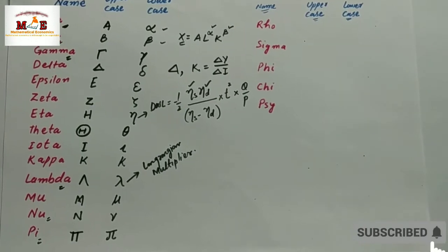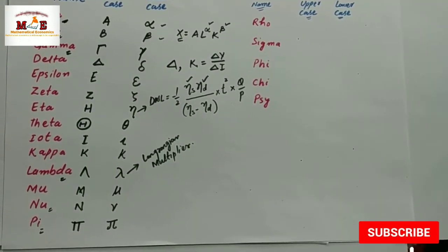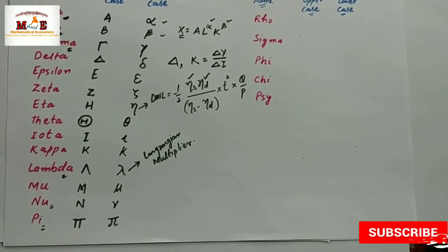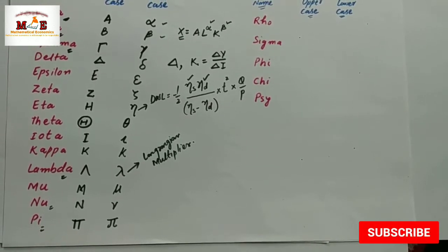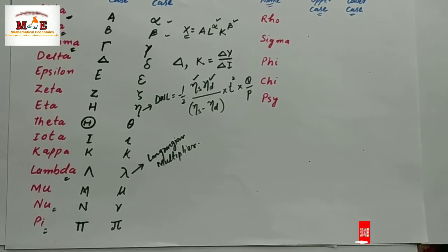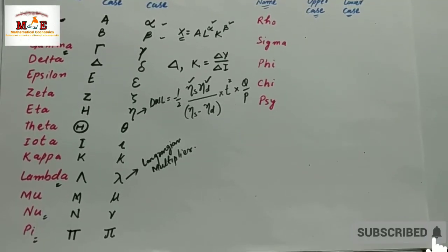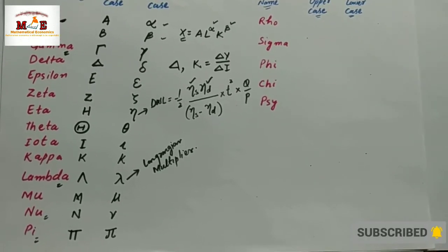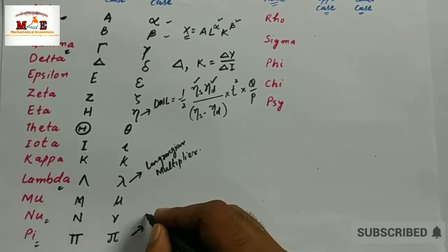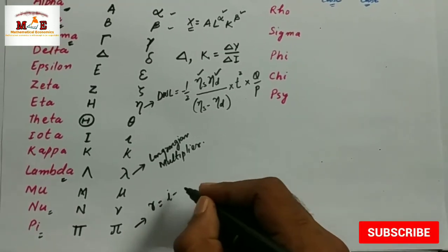Pi is used in various places in economics. It is used sometimes to represent the inflation rate, and sometimes it is used to represent profit functions in economics.